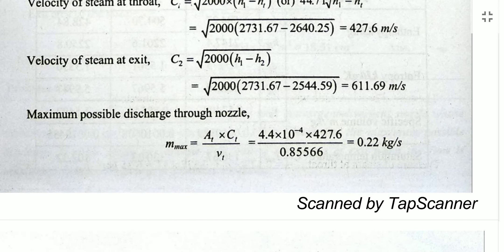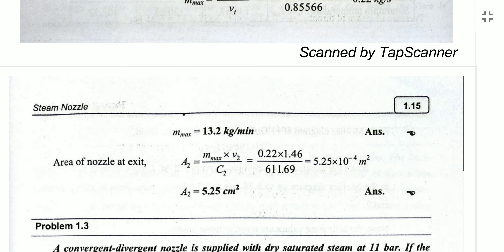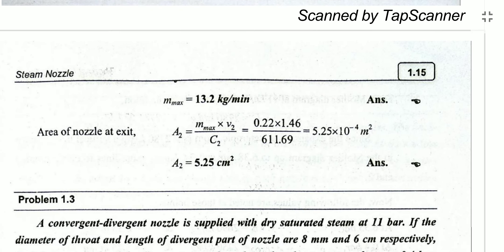The maximum possible discharge is calculated using the mass flow rate formula with the throat conditions: ṁ_max = (A_throat × CT) / VT. Substituting the known values gives the maximum discharge. The exit nozzle area A2 is found using ṁ = (A2 × C2) / V2, which gives the area at the nozzle exit.